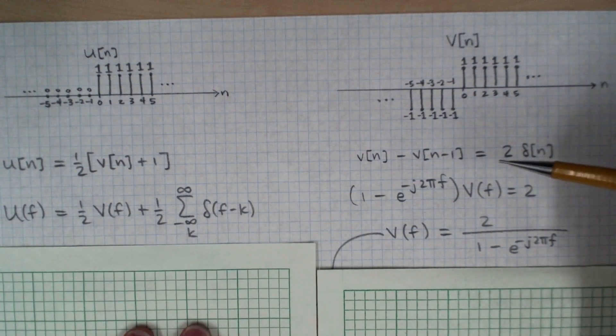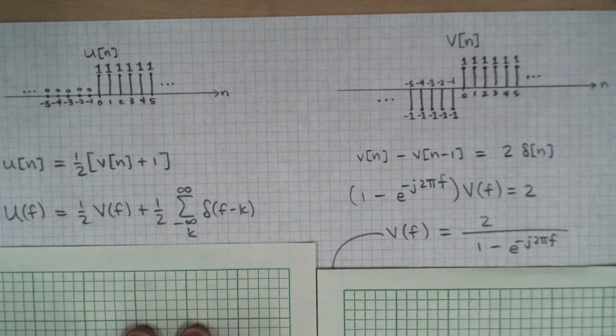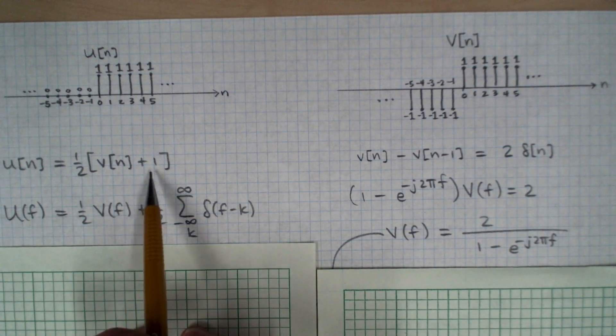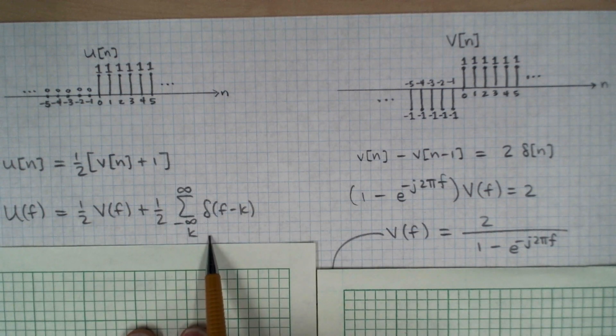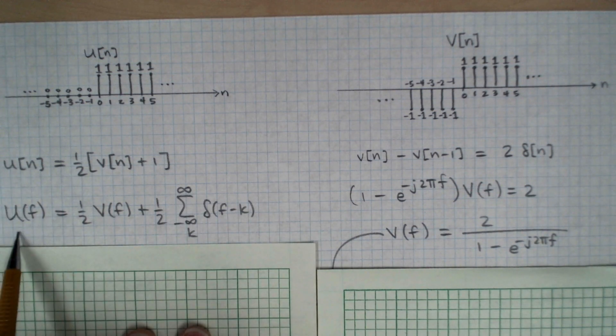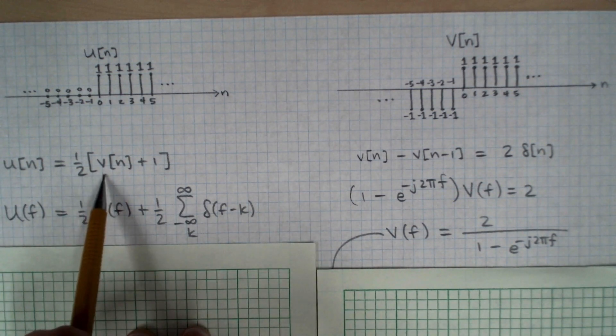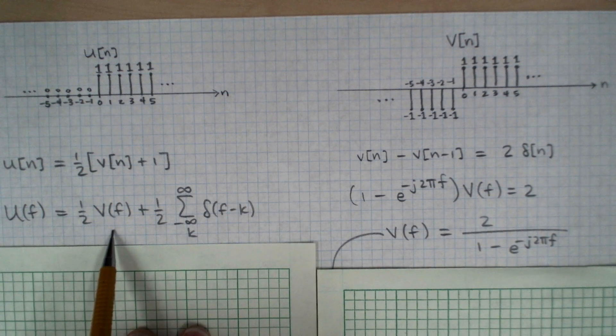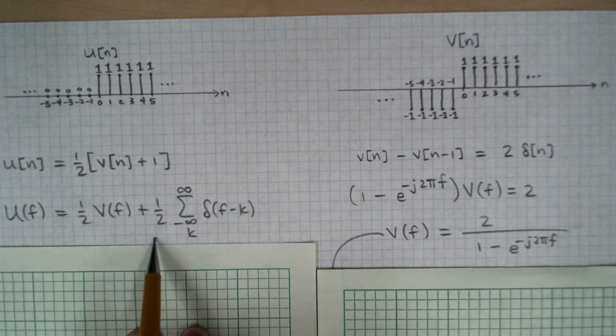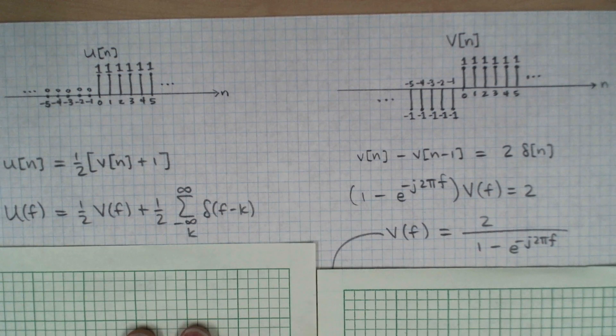And using a transform that we proved previously, which is that the transform of a constant of 1 is equal to an infinite train of delta functions, we get this expression here. So the transform of the unit step is U, the transform of 1 half of V is 1 half V, and then the transform of 1 half is 1 half times a train of delta functions.